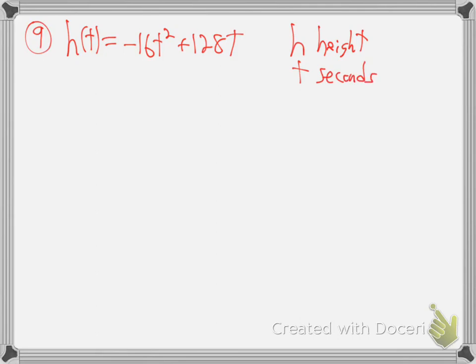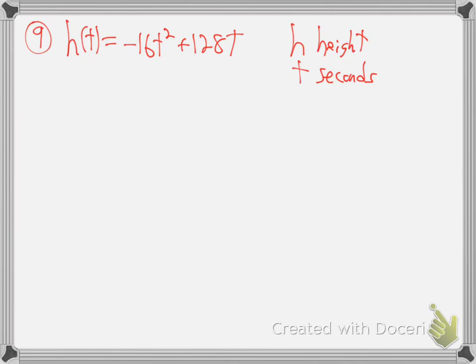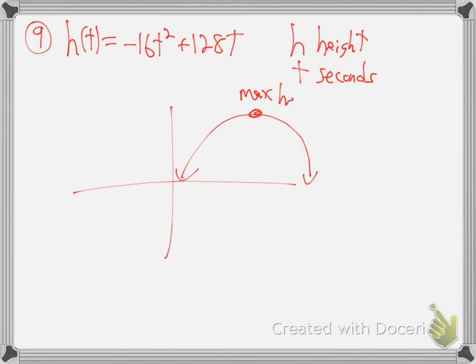So plug in the 4. y equals - or h in this case - negative 16 times 4 squared plus 128 times 4. Just use your calculator. That'll be minus 16 times 16 plus whatever 128 times 4 is. Is the answer 256? 256 feet. So in other words, that projectile will reach a maximum height of 256 feet at time 4 seconds into its flight.